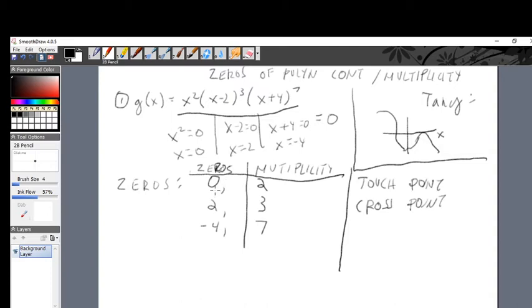So, this zero, at this zero, then the graph, the polynomial, just touches the x-axis and goes back. At this point, it cuts right through it. When zero is equal to 2, x is equal to 2, then it's going to cut right through it. And what about over here, where this is also odd? Same exact thing. It's going to be a crosspoint. Even is touchpoint. An even multiplicity creates a touchpoint. And an odd multiplicity creates a crosspoint.